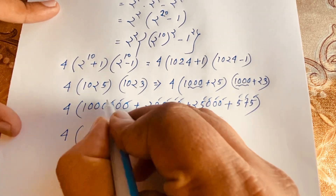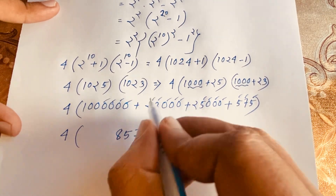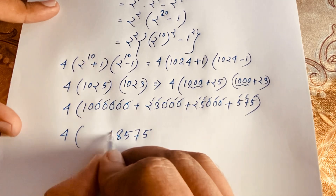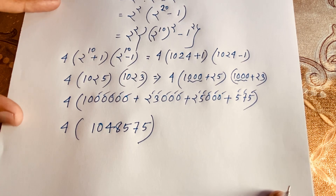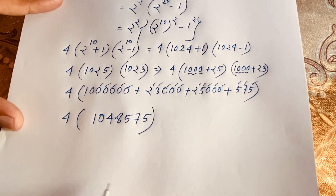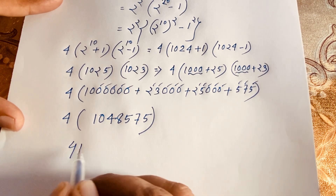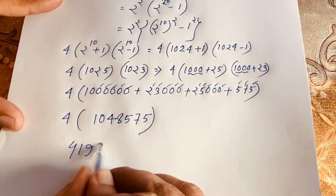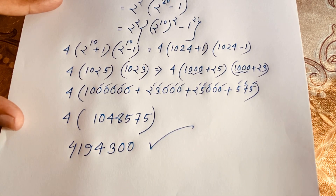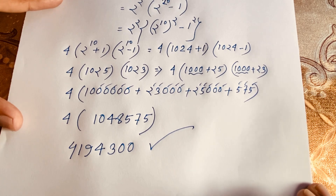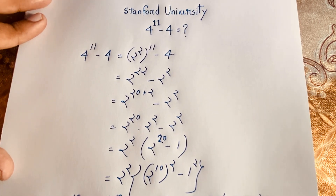So, 4 times 1,048,575 equals 4,194,300. This is our final answer to this maths question. Thank you all — if you enjoyed this video, please subscribe to my channel for other interesting videos. Goodbye, take care.